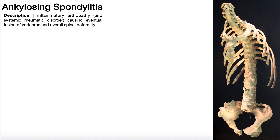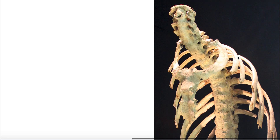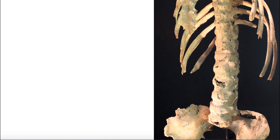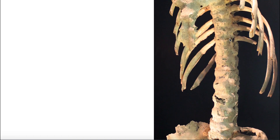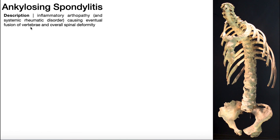Before we go any further, let's take a look at this picture over here on the right. This is actually from a human cadaver — a person that was affected by ankylosing spondylitis. The first thing you probably see is that all these vertebrae are clearly fused together. You cannot see the intervertebral space where the discs were, and it's hard to tell where each vertebra begins and ends. Internally, the hallmark feature of ankylosing spondylitis is fusion of all the vertebrae.